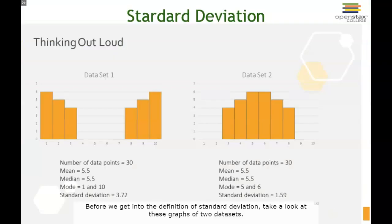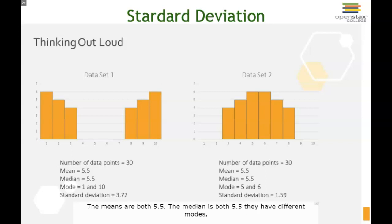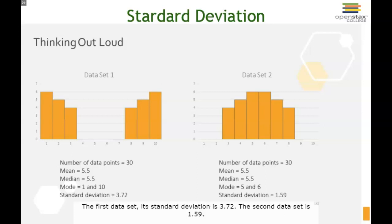Before I get into the definition of standard deviation, take a look at these graphs of two data sets and contemplate what you think standard deviation measures. Both sets of data have 30 data points. The means are both 5.5, the medians are both 5.5. They have different modes — one is bimodal with 1 and 10, and the other is bimodal with 5 and 6. The first data set has a standard deviation of 3.72.